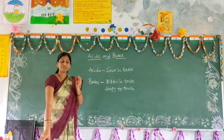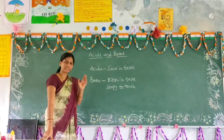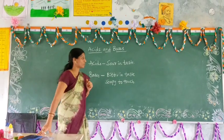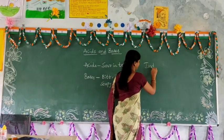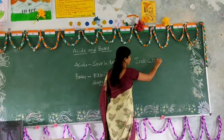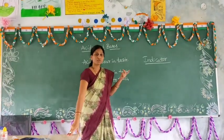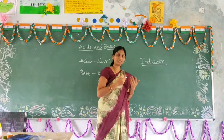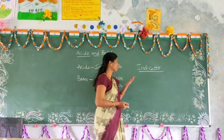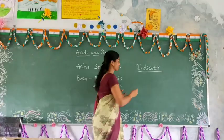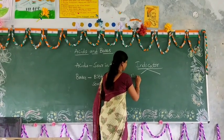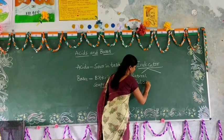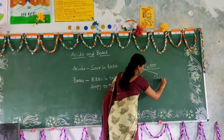We are going to see different activities to find out whether the given substance is an Acid or a Base. For that we need a substance known as an Indicator. An Indicator is a substance used to find out whether the given substance is an Acid, a Base, or a Neutral Substance. There are two different types of Indicators: Natural Indicators and Chemical Indicators.